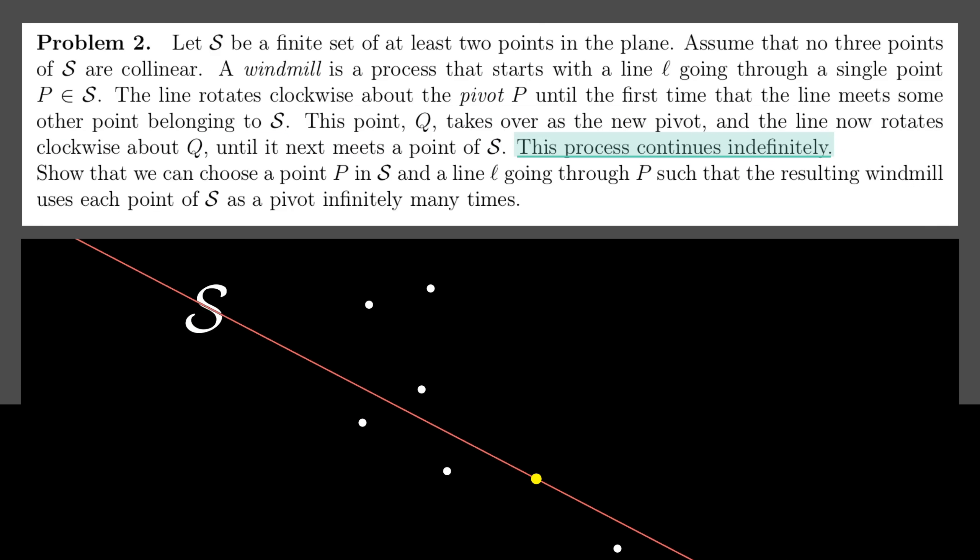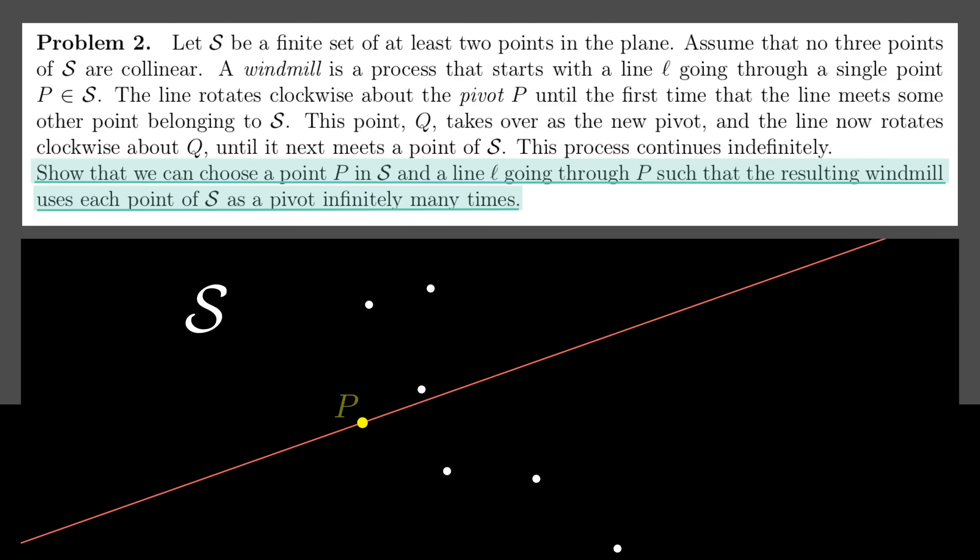Alright, that's kind of fun. We keep rotating and changing the pivot. And you can see why they call it a windmill process. And you can also see why they specified that no three points lie on one line. You wouldn't want to run into the ambiguity where you don't know which pivot to switch to. Okay, so with all this setup, what's the question? Show that we can choose a point P in S and a line l going through P such that the resulting windmill uses each point of S as a pivot infinitely many times.